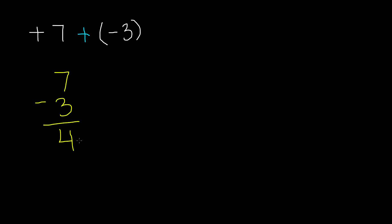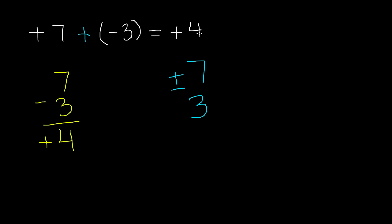Now that you have your answer, you need to put a sign in front of it. You choose that by looking at the numbers. We have 7 and 3, and we take the sign of the larger number. The larger number is 7, and it is positive, so I'm going to take the positive sign. My answer becomes positive 4. So the answer to positive 7 plus negative 3 is positive 4, or you can just put 4 as the answer.